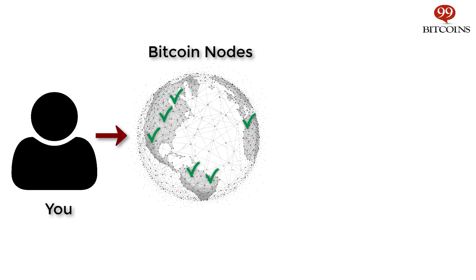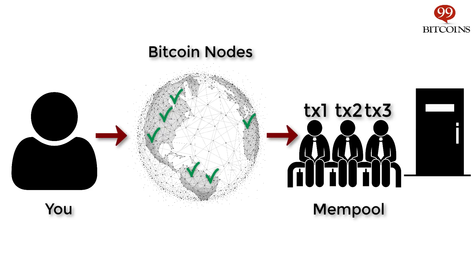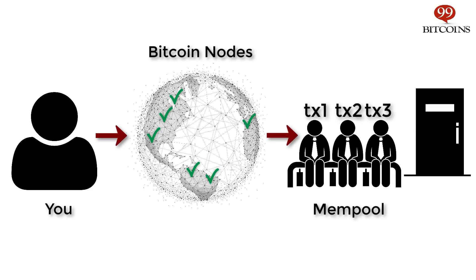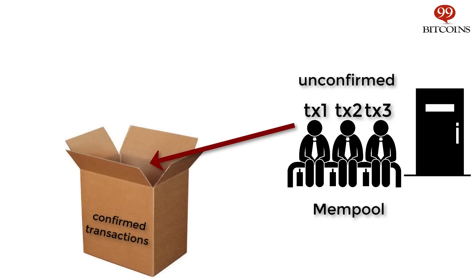After a transaction is deemed valid, it goes into the mempool, short for memory pool. This is sort of a waiting room where the transaction sits and waits for a miner to pick it up and pack it into a block of transactions. In other words, even though the transaction is valid, we still haven't updated it into the global ledger of Bitcoin transactions. At this point, the transaction is considered an unconfirmed or zero confirmation transaction. Finally, once a miner picks up the transaction and includes it in a successfully mined block, the transaction is considered confirmed and the process of sending the funds is complete.